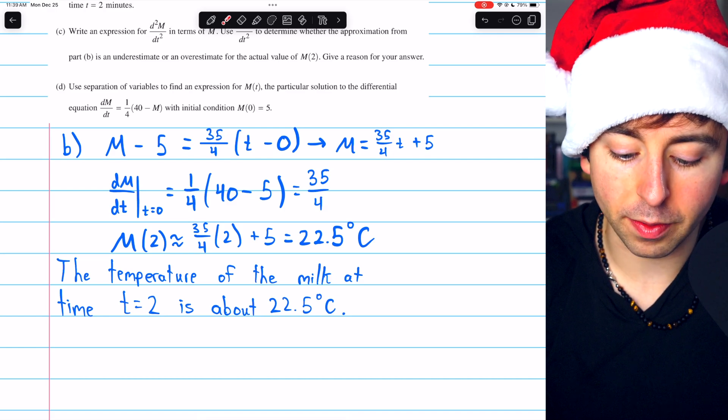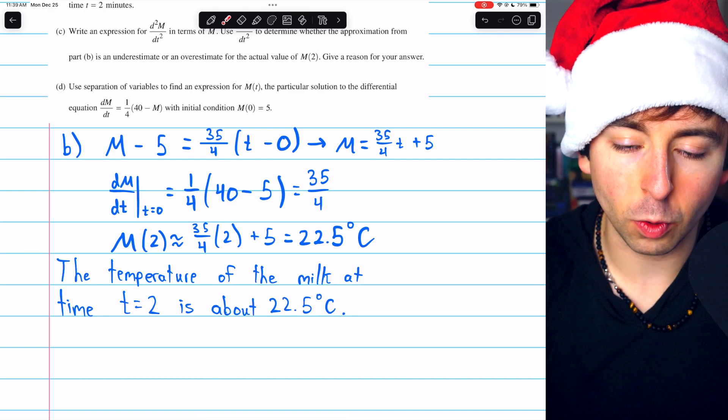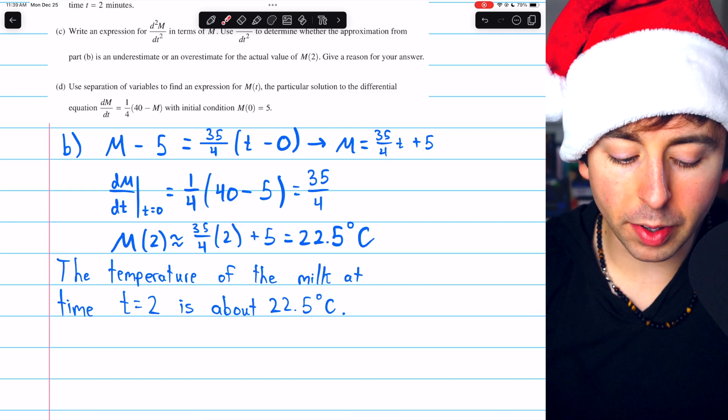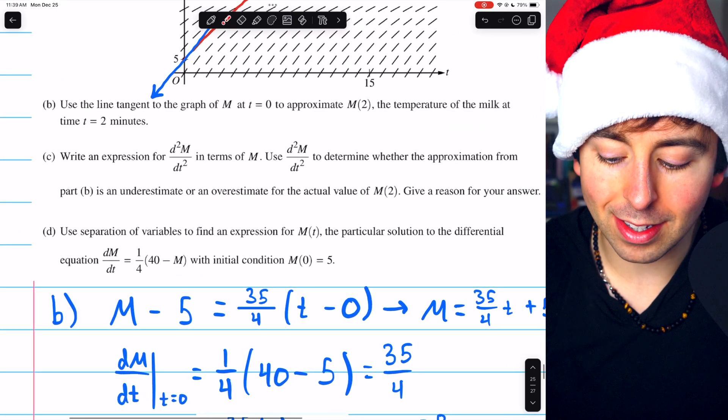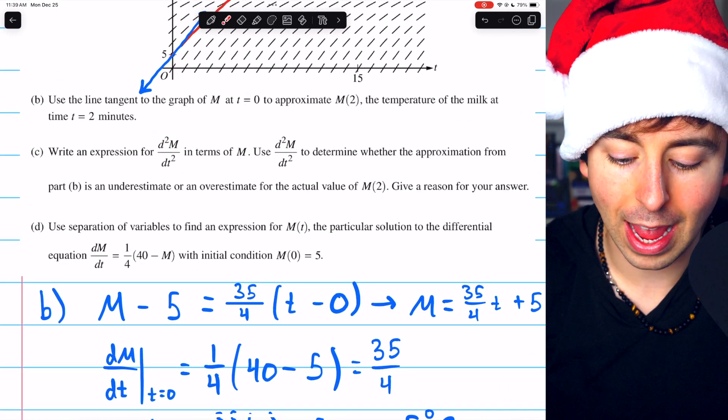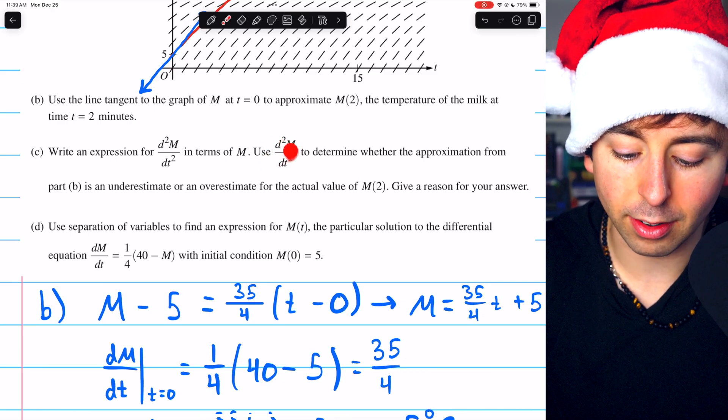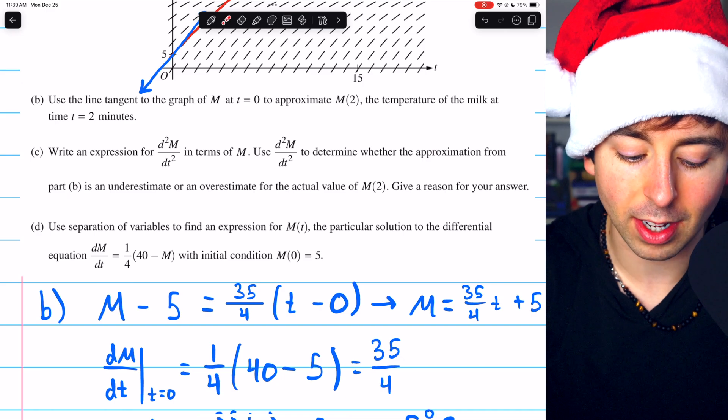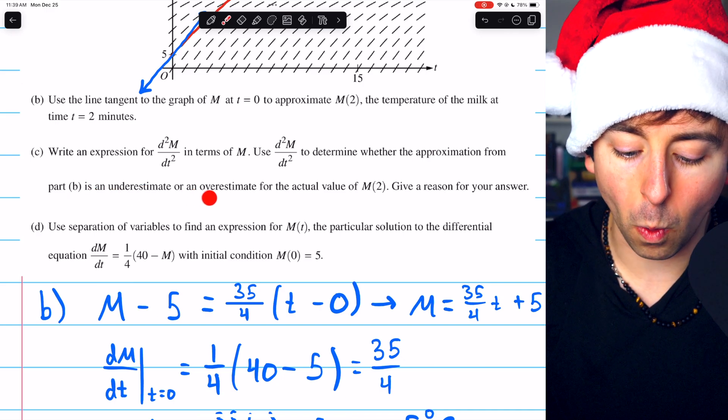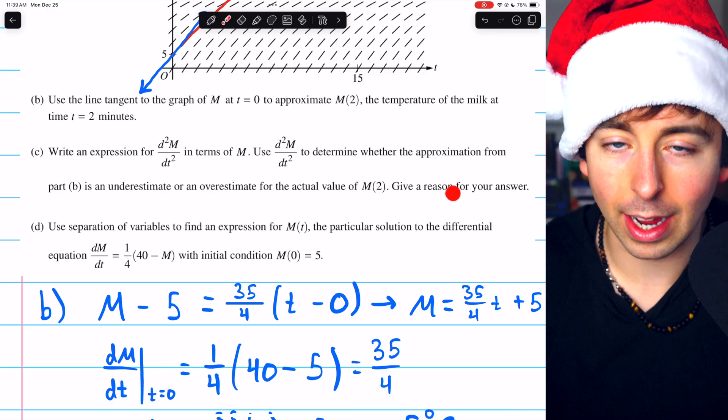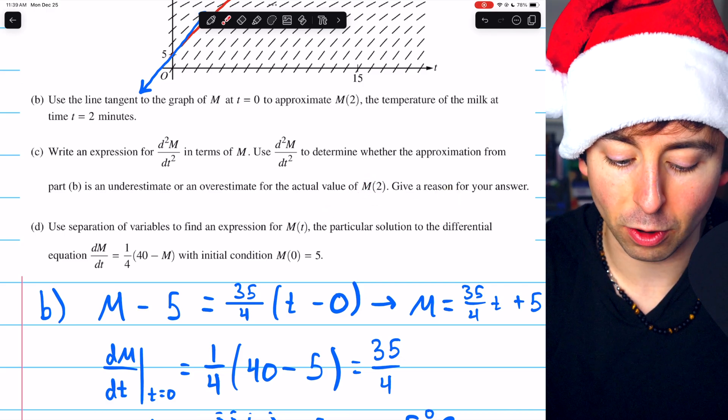We just found the equation of the tangent line using that initial condition, and then plugged in t equals 2. Moving on to part C. Write an expression for the second derivative of M with respect to t in terms of M, and then use this expression to determine whether the approximation from part B is an underestimate or an overestimate.